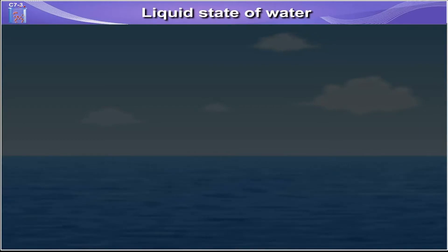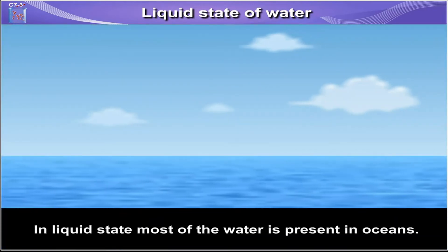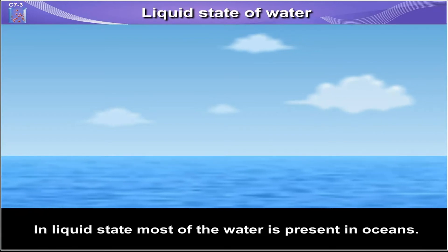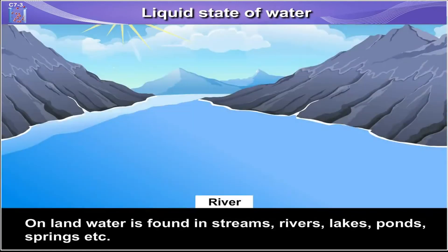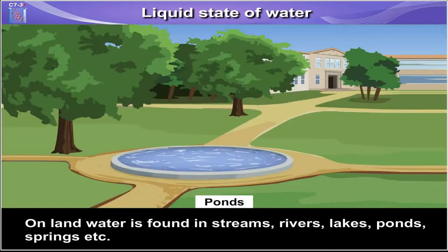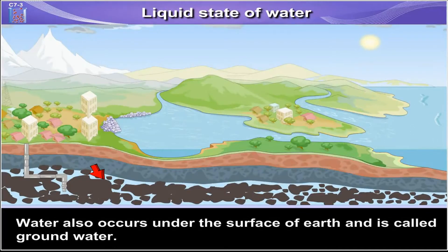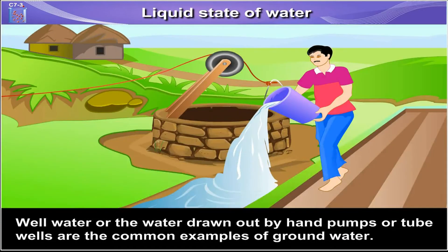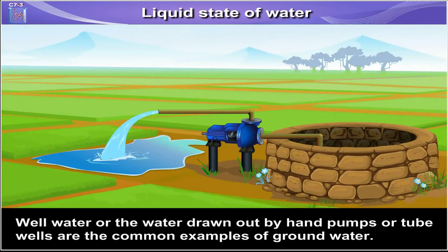Liquid state of water. In liquid state, most of the water is present in oceans. On land, water is found in streams, rivers, lakes, ponds, springs, etc. Water also occurs under the surface and is called groundwater. Well water or water drawn out by hand pumps or tube wells are the common examples of groundwater.